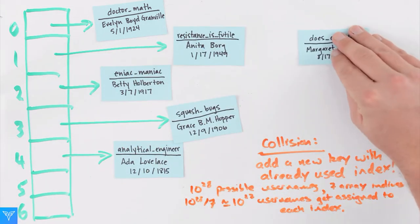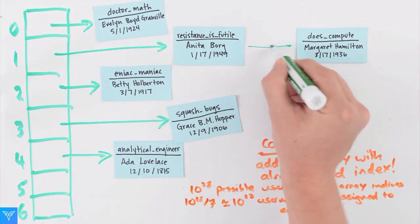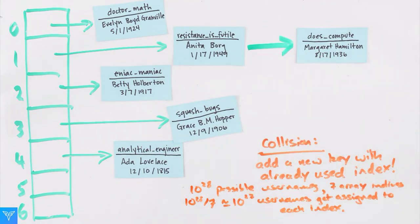Instead of storing elements directly in the array, we could instead store the beginnings of linked lists. When we have a collision, we simply add to the linked list at that index. You can already see if we're really unlucky, a lot of elements could get assigned to the same index. We have to search through a lot of elements.